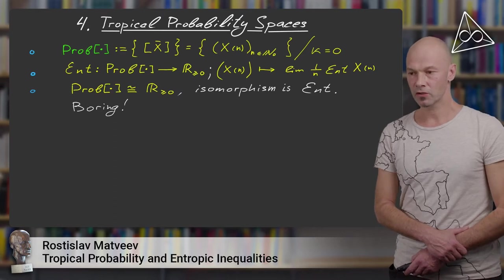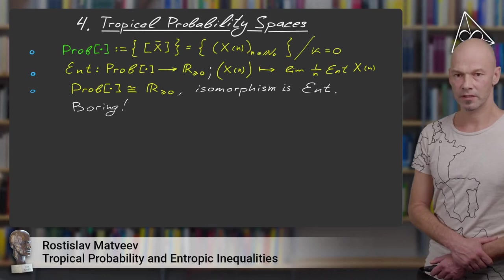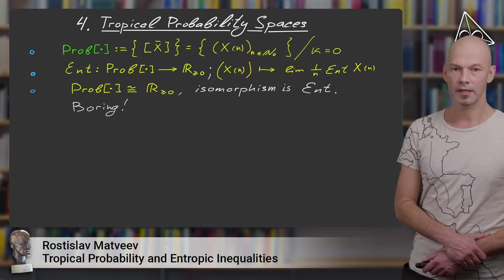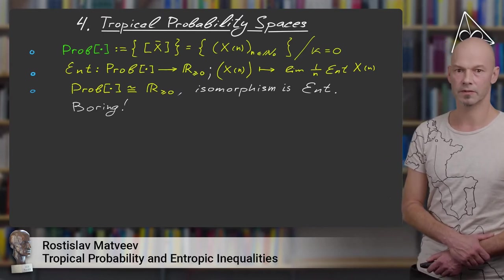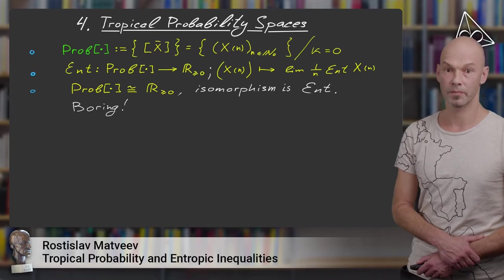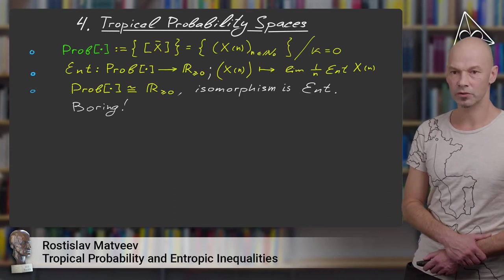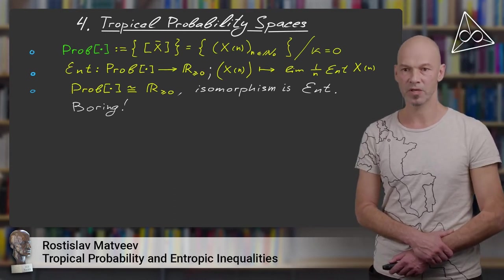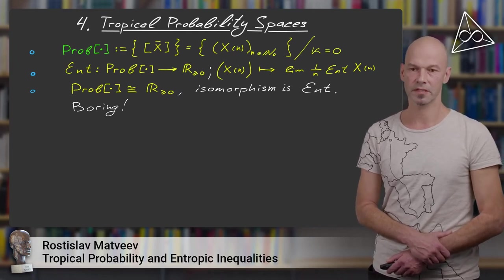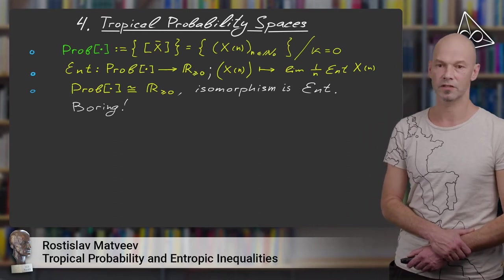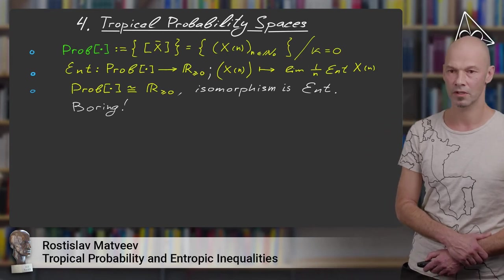On a tropical space, you can evaluate the entropy by taking a representative sequence, evaluating the entropy of individual members, normalizing, and passing to the limit. It turns out that tropical probability spaces are not very interesting, because they are completely determined by their entropy. So the space of all tropical probability spaces is isomorphic to the non-negative ray in the real line, with the isomorphism provided by the entropy. So this is not very exciting.